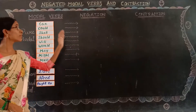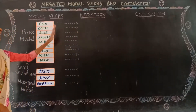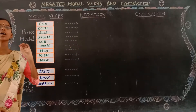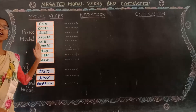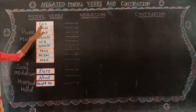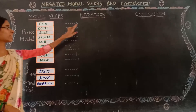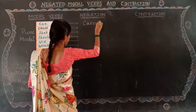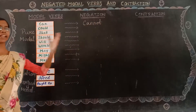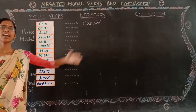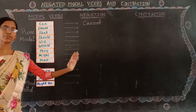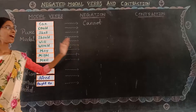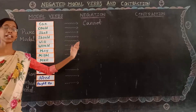Now we will see the negative form of these modal verbs. It is very simple — we just add the word 'not' after the positive form. Take the first word: 'can.' Can plus not gives us 'cannot.' For example: 'I can do it' becomes 'I cannot do it.' That is the basic difference between the positive and negative form of 'can.'